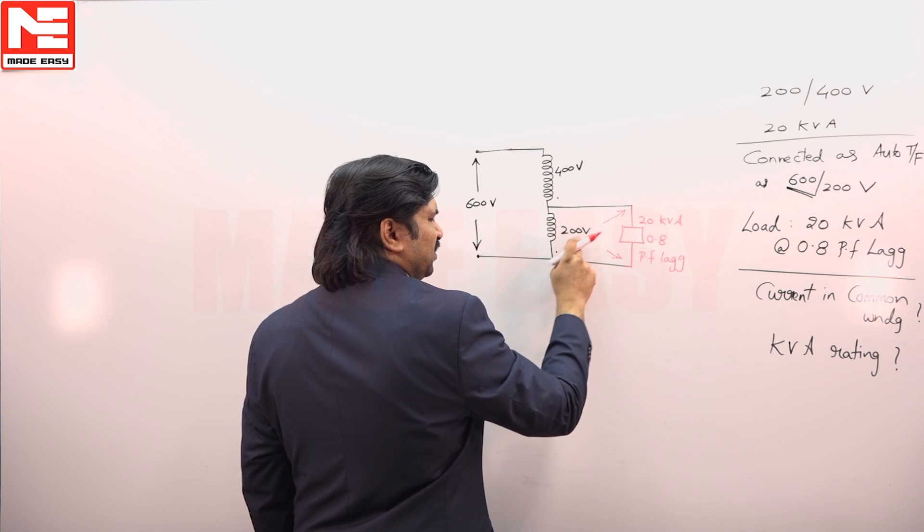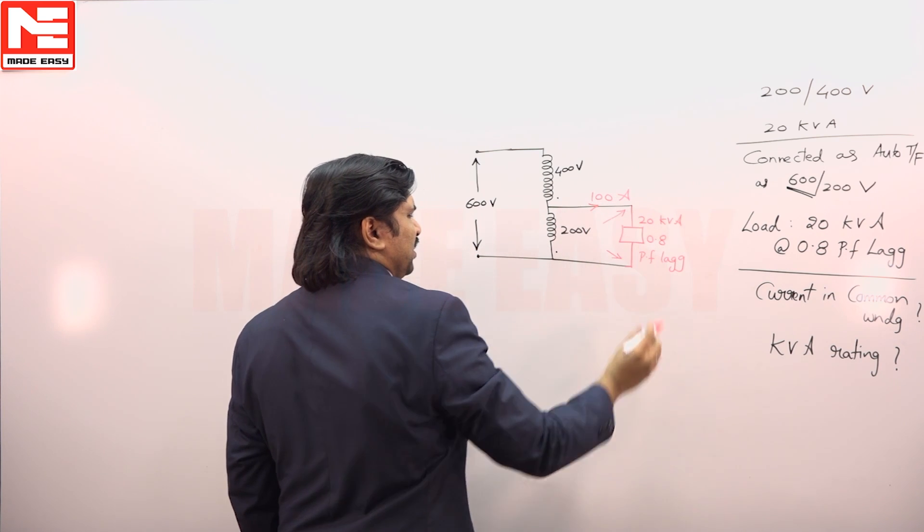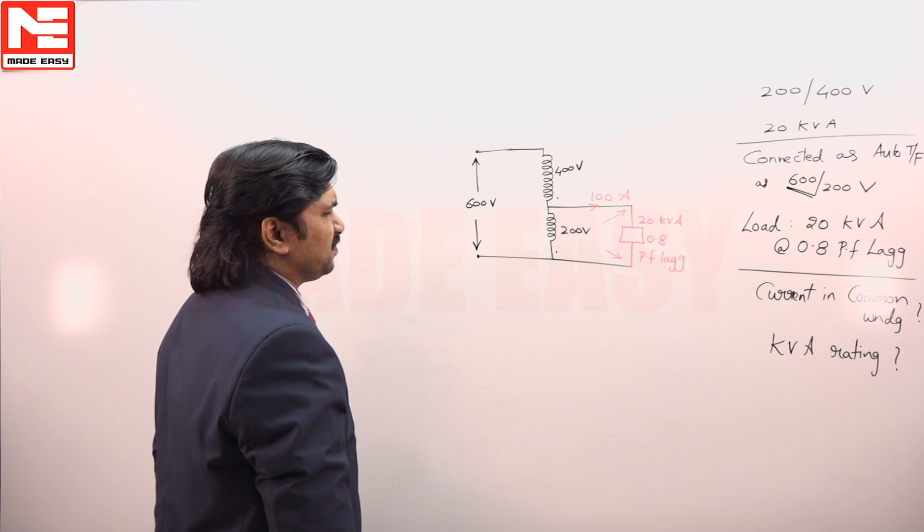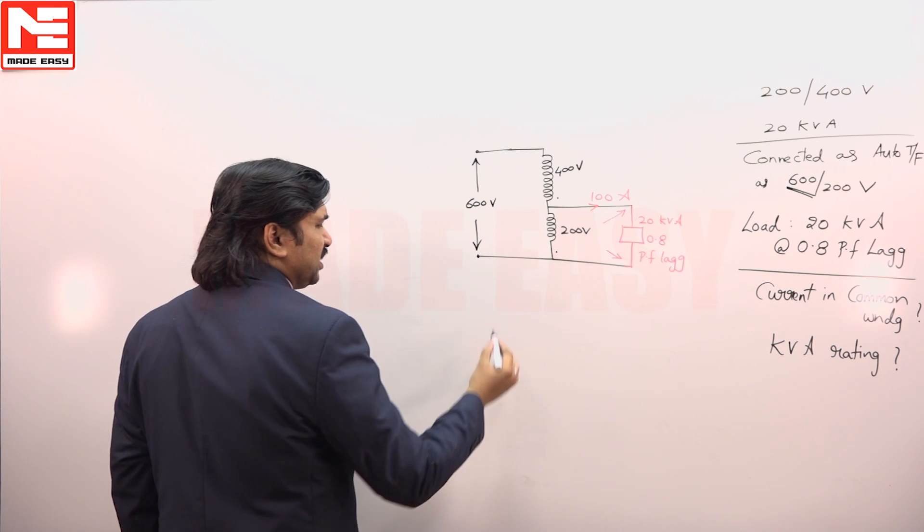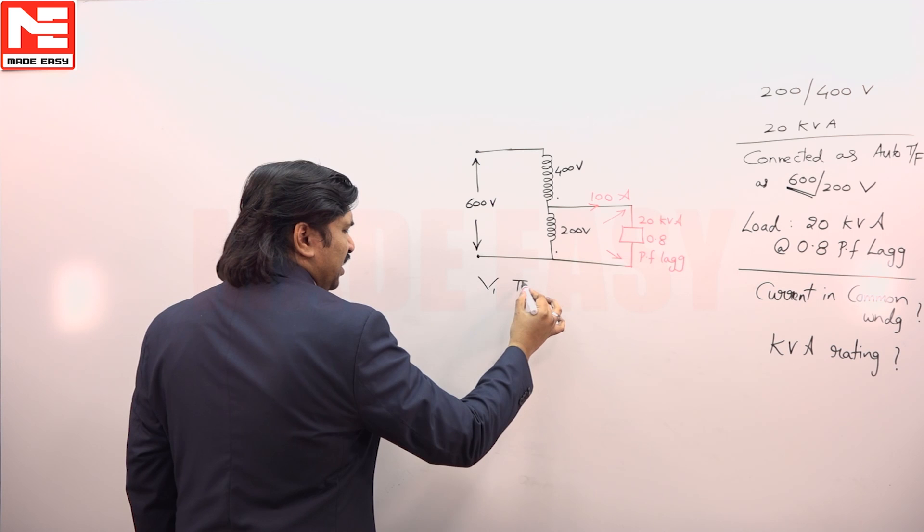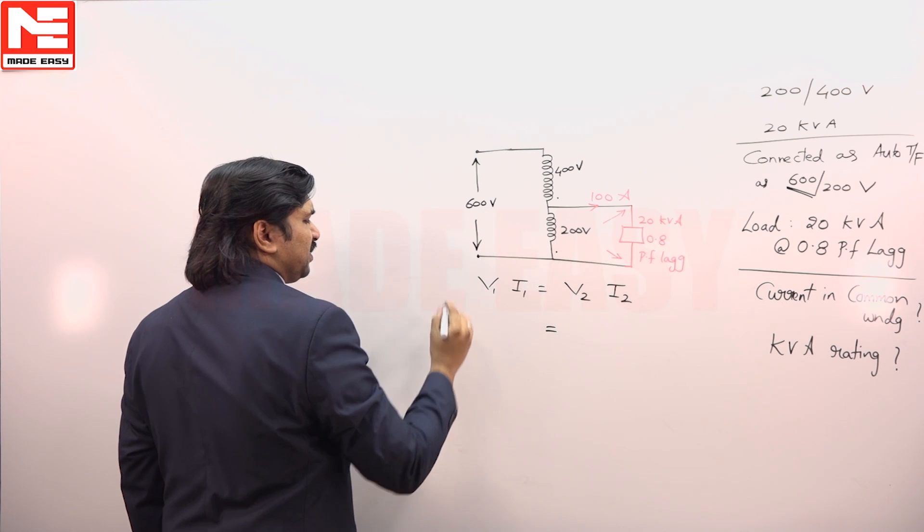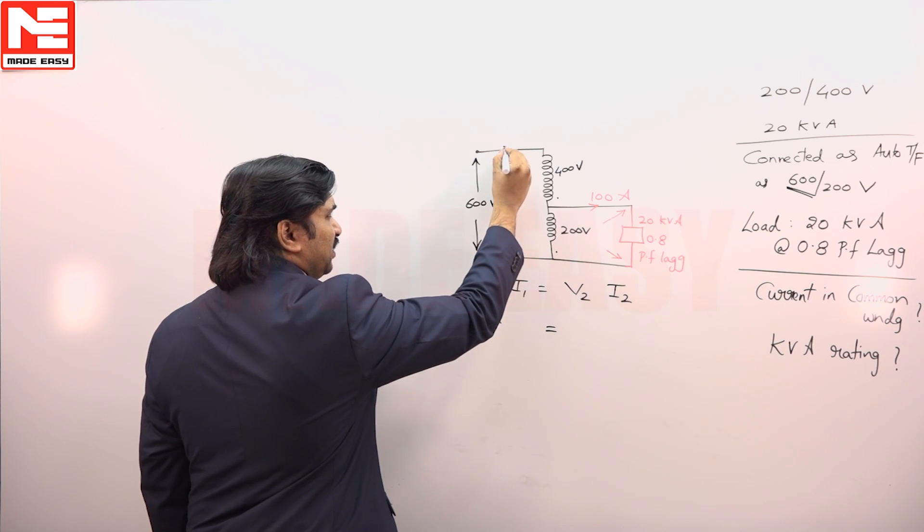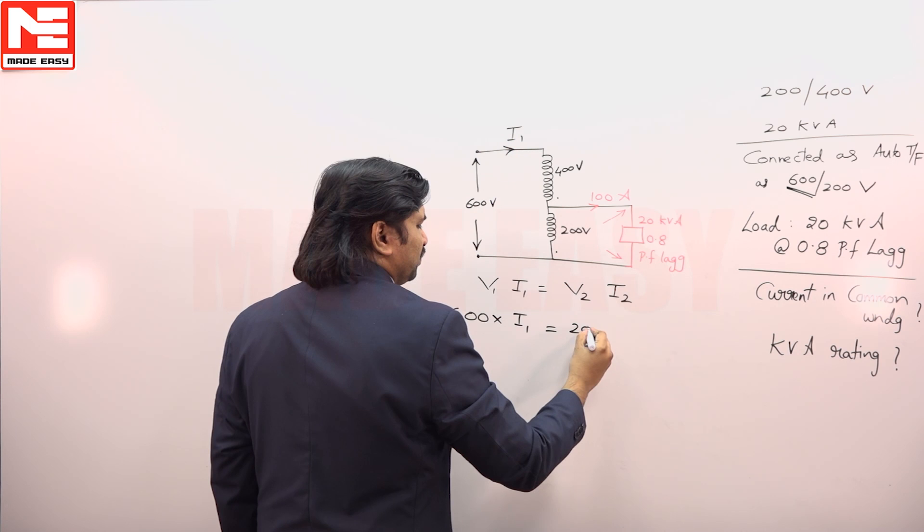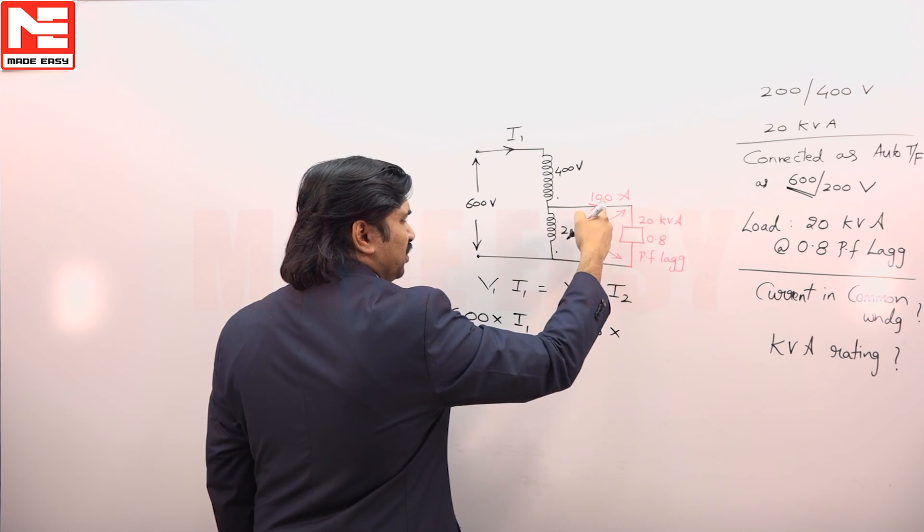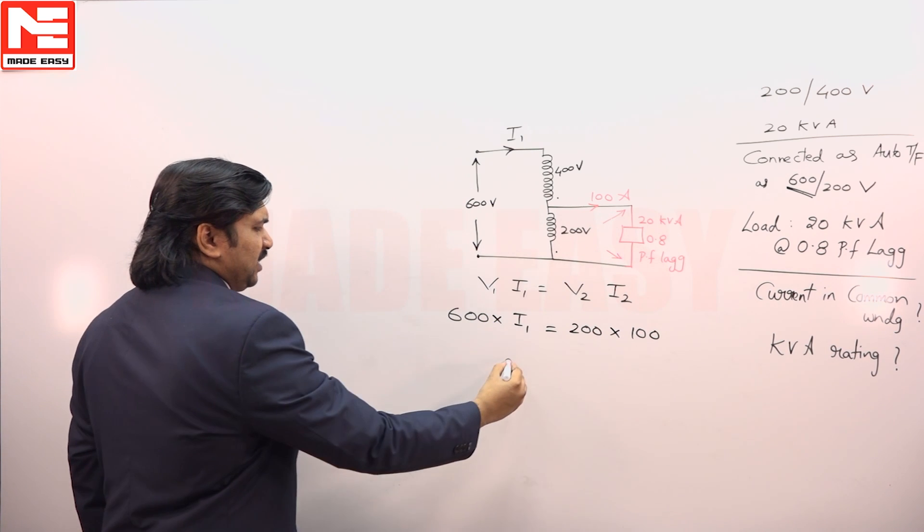20 kVA, 0.8 power factor lagging. Voltage across the load is 200, load rating is 20 kVA, so definitely the current flowing in this is 100 amperes. Now if you want to know the current rating, first simply what we can do is in a transformer we write v1*i1 equals v2*i2. What is v1? 600. What is i1? We have to calculate. What is v2? 200. What is i2? 100. Then i1 is equal to...